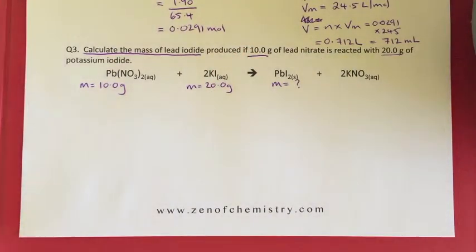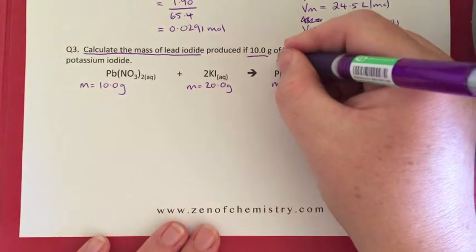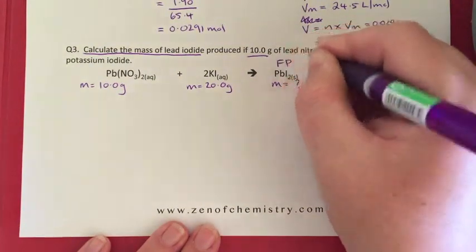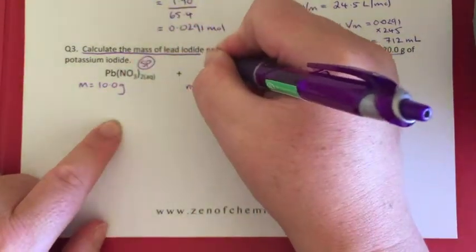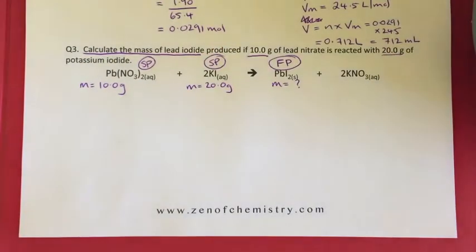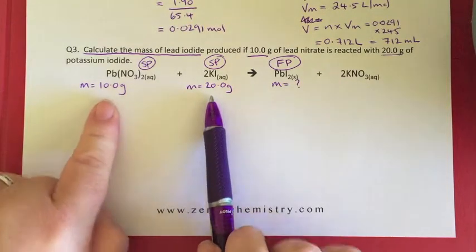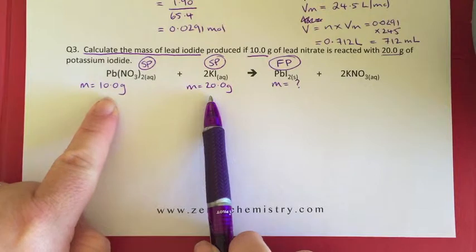Now in question 1 and question 2 we had a clear starting point and finishing point. I can very clearly ascertain this is our finishing point, but we actually have two starting points. This indicates to me that this type of question is a limiting reagent excess reagent question. So what we have to do is work out which one of these is our limiting reagent and which is in excess.